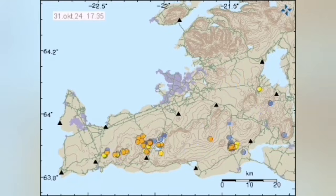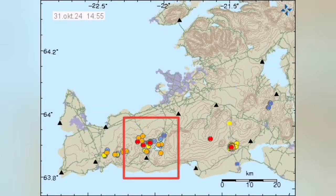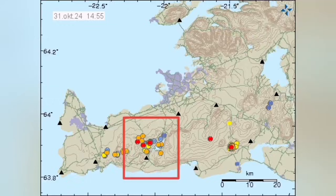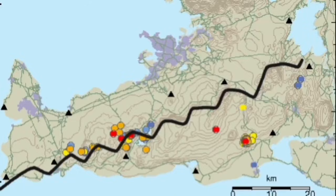Many of them are concentrated around this lake, which we call Kleifarvatn, and that is forming along a series of the transform and extension faults that divide the boundary between Eurasia and North America.